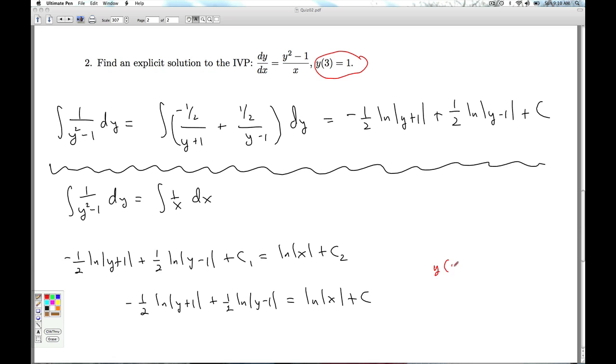So, y at three equals one corresponds to the point x equals three, y equals one. And so we plug in x equals three, y equals one. Getting one-half natural log of four, plus one-half natural log of zero. That's going to equal natural log of three plus c.